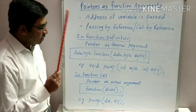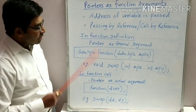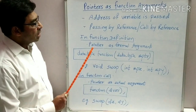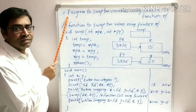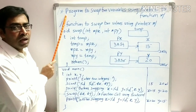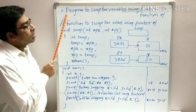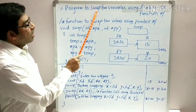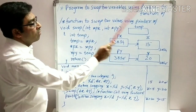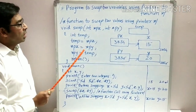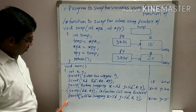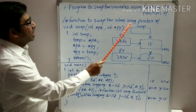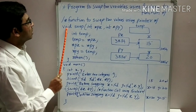Now, let us apply this concept in a program. Using this concept, I will write a program. Let us see how to write a program using pointers to function. Here is one sample program: program to swap two variables using pointer to function. Let us write the function definition first, followed by the main function. I will write the function definition to swap two variables using pointer. The name of the function is swap and the return type is void.